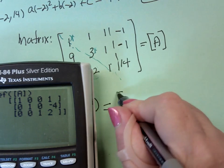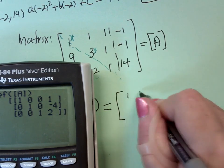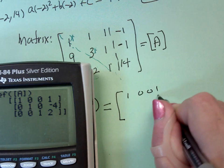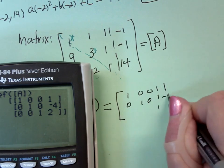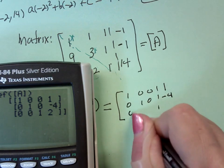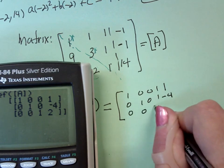That this is going to be equal to the matrix 1, 0, 0, 1, 0, 1, 0, negative 4, 0, 0, 1, 2.